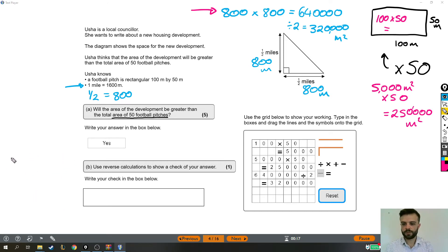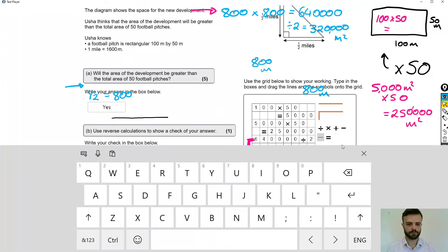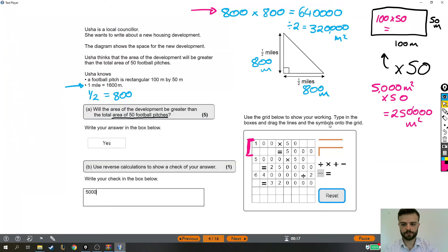So we're going to pick any part of that working out. I'm going to choose to do this first thing we did and we're going to do a reverse check of that. Now like we discussed, that means we're going to start with our answer, which is 5,000. We times by 50 before, so this time we're going to divide by 50 and the answer should be this number here—this 100.